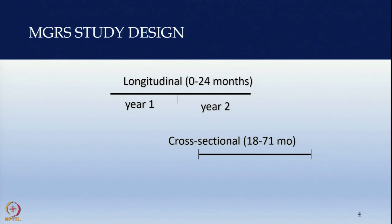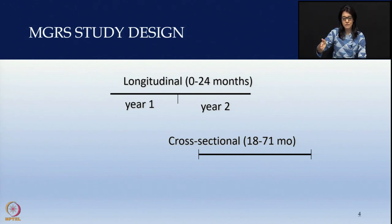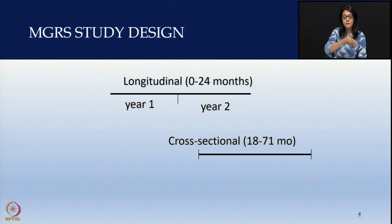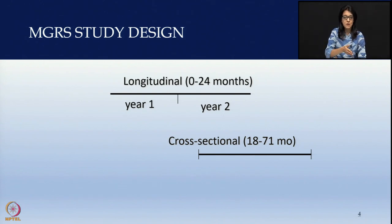The study took longitudinal data for 0 to 24 months of age — they monitored the same children regularly. They took height and weight from birth till 2 years of age. Then at 18 months to 71 months they took cross-sectional data — a one-time data collection from a different set of children. That is the difference between longitudinal and cross-sectional data.